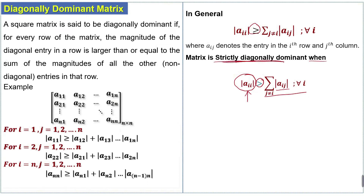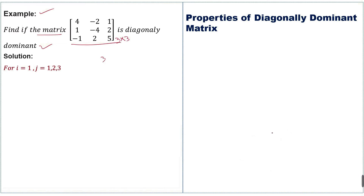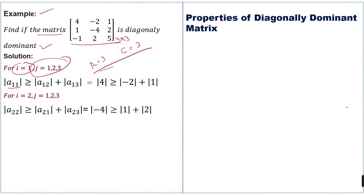Now we will solve an example to determine whether a given matrix is diagonally dominant. We have a 3×3 square matrix. For the first row, the diagonal entry has magnitude 4, which must be greater than or equal to the sum of the magnitudes of the other entries: |2| + |1| = 3. So 4 ≥ 3.